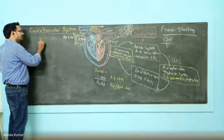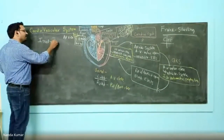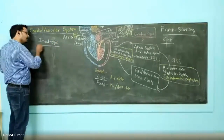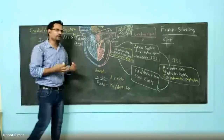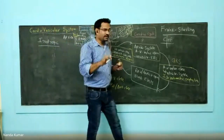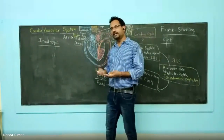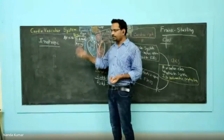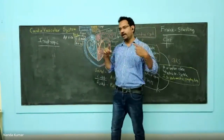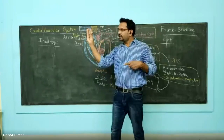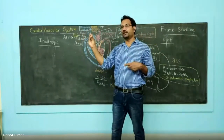The first action is inotropic activity. In Greek, 'ino' means muscle or strength. Inotropic action means increasing muscle activity. When adrenaline or noradrenaline is released, they bind with the beta-1 receptor and increase muscle tension — that means they increase the force of contraction.